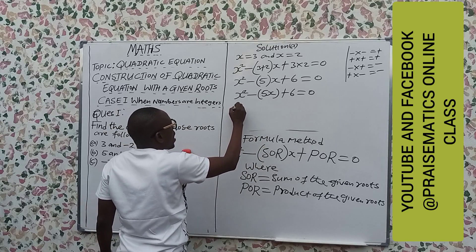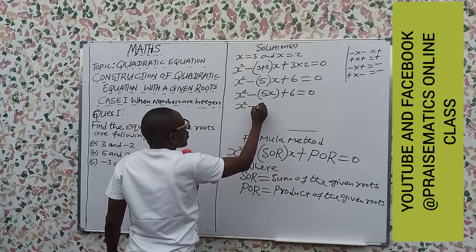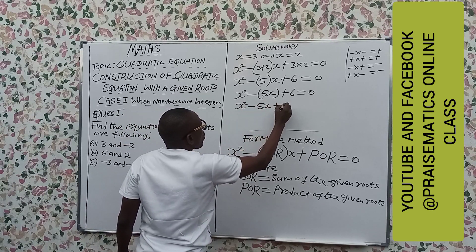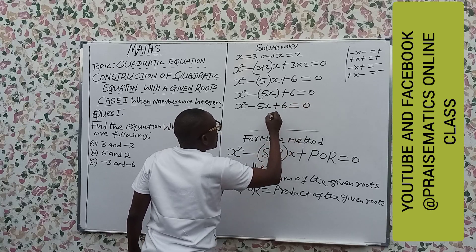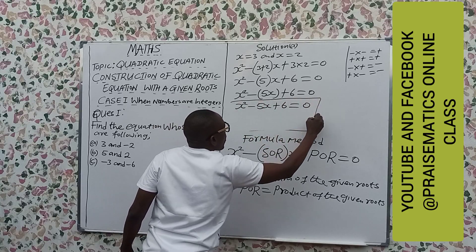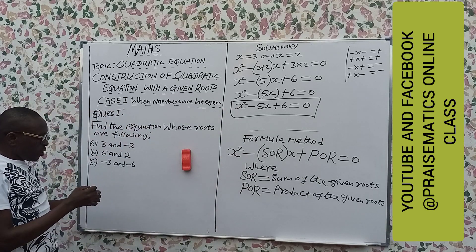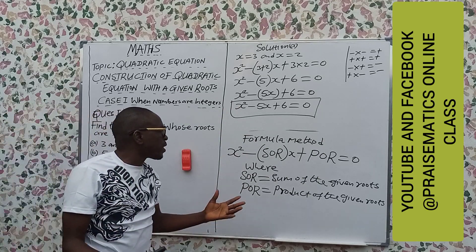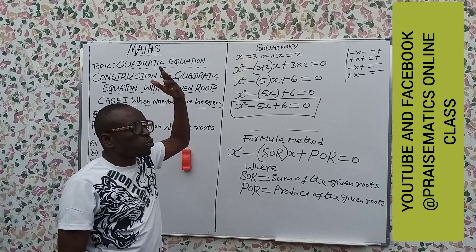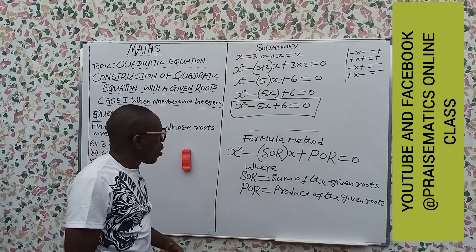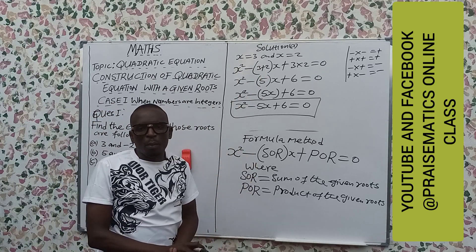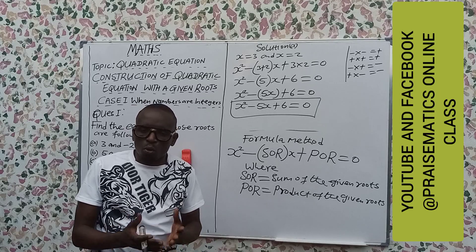What do we have here? We have x squared minus x minus 6 equal to 0. And this is our quadratic equation. So you can choose the method that you are going to use, whether you are going to use expansion method or formula method. It depends on the one that you want to use.